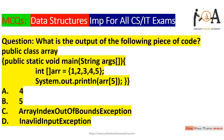The very first question is: what is the output of the following piece of code? We have a public class array with a public static void main. An array is declared of size five, meaning indices 0 through 4. At index 0, value 1 is stored; at index 1, value 2 is stored; at index 2, value 3 is stored; at index 3, value 4 is stored; at index 4, value 5 is stored. Then system.out.println(array[5]) is called.